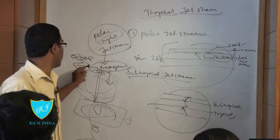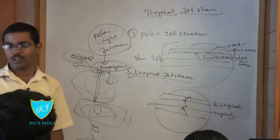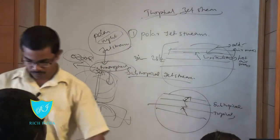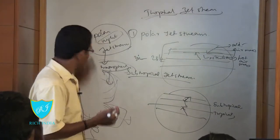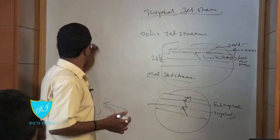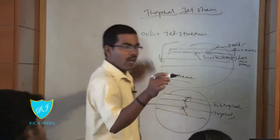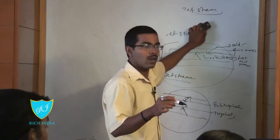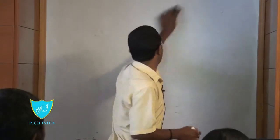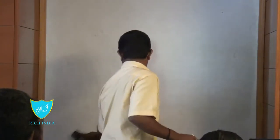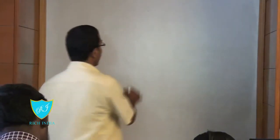The stratosphere is where ozone depletion happens due to CFCs being carried there. There is also a local jet stream. And the index cycle describes how the jet stream originates and how it operates.